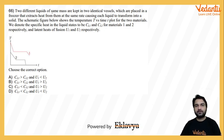Two different liquids of same mass are kept in two identical vessels which are placed in a freezer that extracts heat from them at the same rate, causing each liquid to transform into a solid. Schematic figure below shows the temperature capital T versus time small t plot for the two materials. We denote the specific heat of the liquid to be Cl1 and Cl2 for materials 1 and 2 respectively and latent heat of fusion to be U1 and U2 respectively.